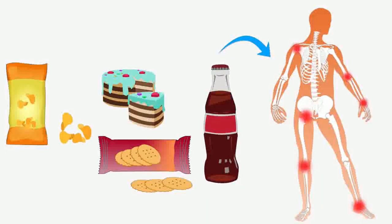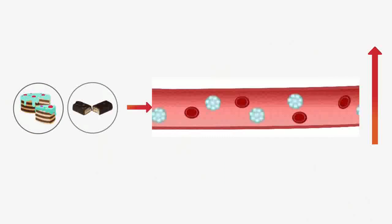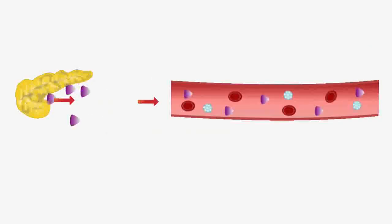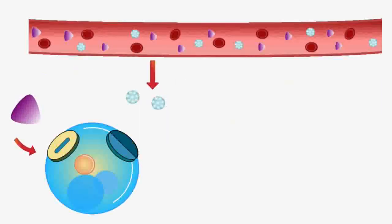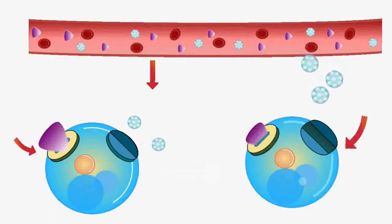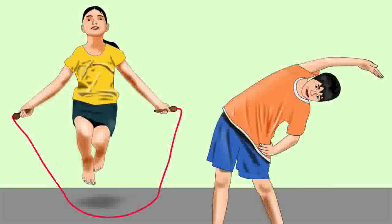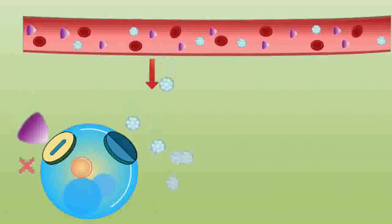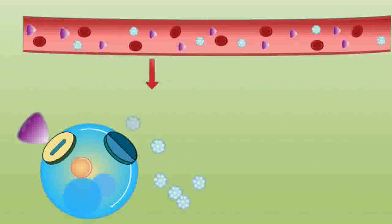Let us now see the effect of junk food on our body. Junk food which is high in sugar causes an immediate rise in blood sugar levels. As a result, the pancreas releases insulin in our blood. Insulin is a hormone which acts like a key to open the cells, allowing them to absorb sugar from the blood to provide us energy.